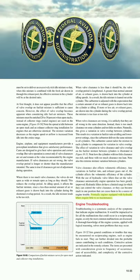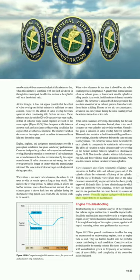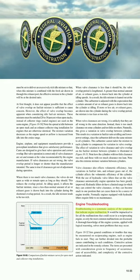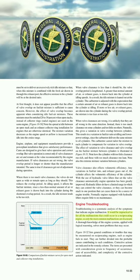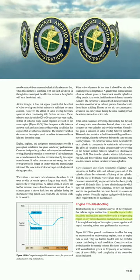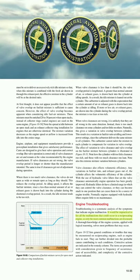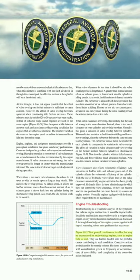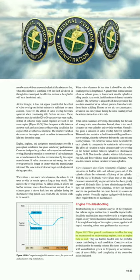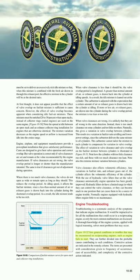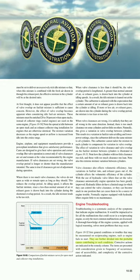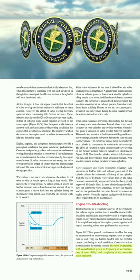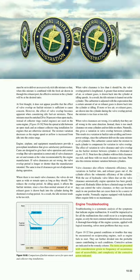Engine troubleshooting is a systematic analysis of symptoms indicating engine malfunction. It would be impractical to list all possible malfunctions in a reciprocating engine, so only the most common are discussed. Thorough knowledge of engine systems, applied with logical reasoning, solves most problems. Figure 1052 lists general conditions or troubles that may be encountered on reciprocating engines — such as engine fails to start — divided into probable causes and remedies, presented based on frequency of occurrence, accessibility, and complexity.